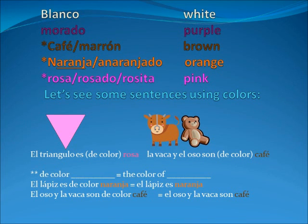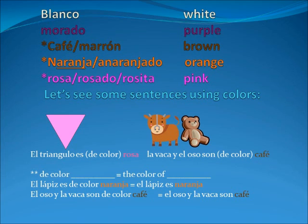Blanco — when you think about blanco, think about a blank space that you have to fill out. That space is blank, it's white. Blanco — white. Morado — think about the purple heart. It has the color purple, hence the name. The shape of the heart, the top of it, can help you think of the letter M. Morado — purple.